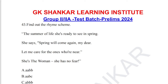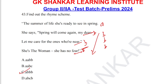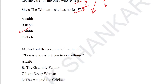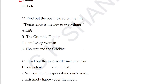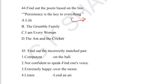Question number 43: find out the rhyme scheme. 'The summer of life she is ready to see in spring / she says spring will come again my dear / let me care for ones who are near / she is the woman, she has no fear.' The rhyme scheme: spring (A), dear (B), near (B), fear (B) — so the rhyme scheme is ABBB. The answer for question number 43 is ABBB.